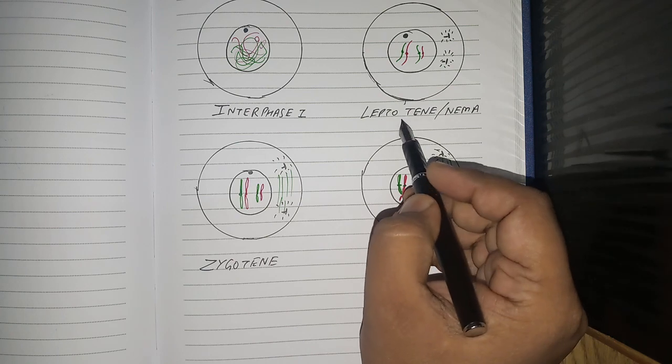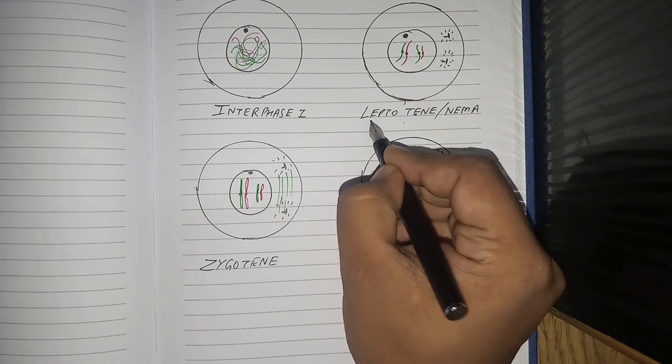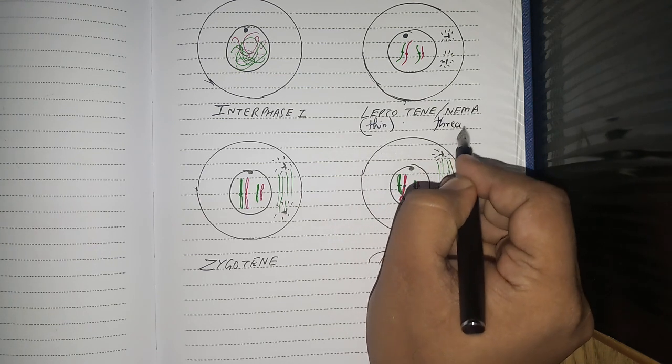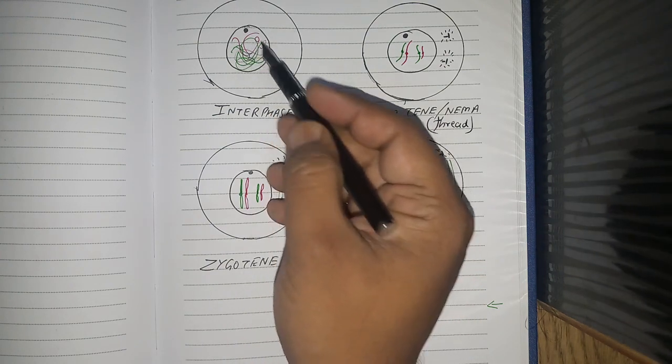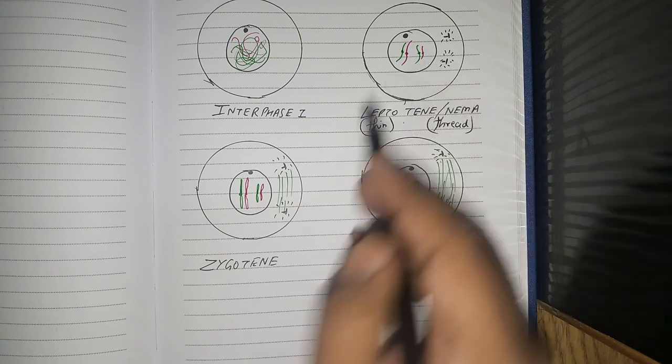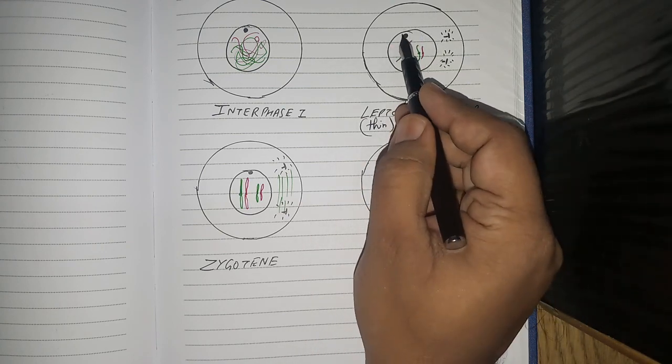In leptotene, also called leptonema—lepto is thin and nema is thread—it's basically thin thread. The already replicated chromatin fibers condense to form thin threads like this. These are chromosomes. This is nuclear membrane. This is nucleolus.